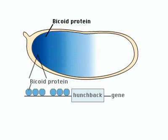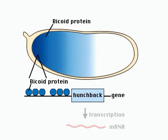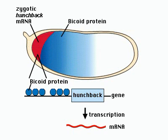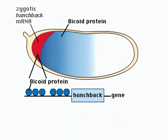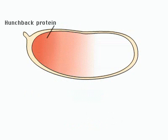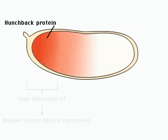forming a protein gradient. Bicoid protein activates transcription of the Hunchback gene by binding its promoter. The expressed Hunchback protein is localized to the same region as Bicoid. The Hunchback protein acts as a transcriptional activator or repressor of several other genes,